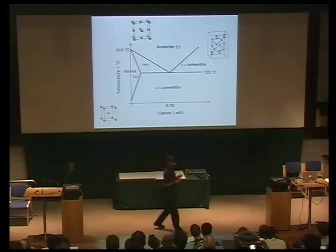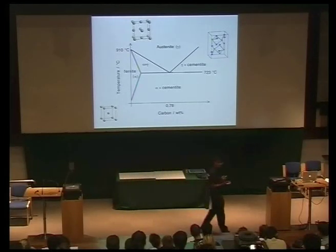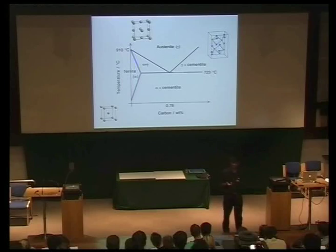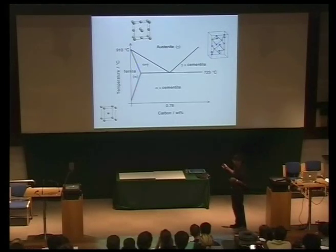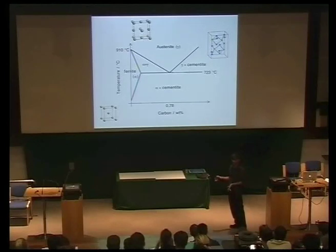Why am I using the word eutectoid instead of eutectic? This is a solid-state transformation. If it was a liquid going to two solid phases, that would be a eutectic.